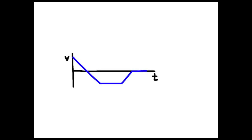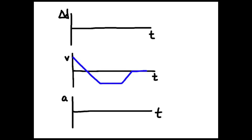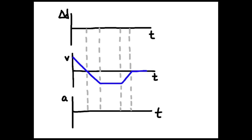So there's a connection between displacement, velocity, and acceleration through area under the curve and slope of the tangent line. Starting with a velocity-time curve, we can generate the other two curves. It's easiest when you line up the three curves vertically and delimit the different segments, as I've done here.